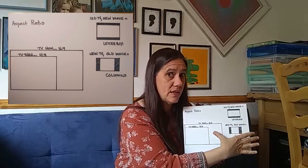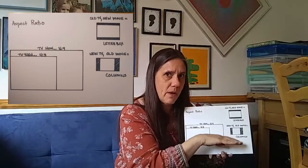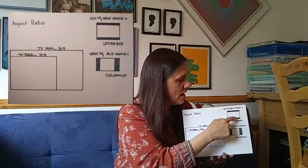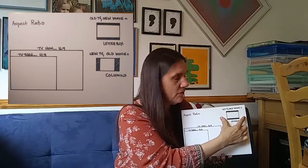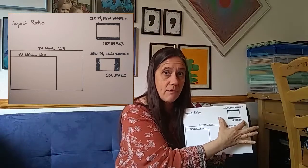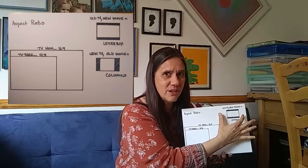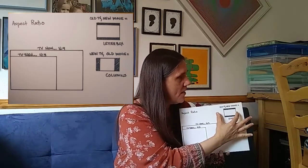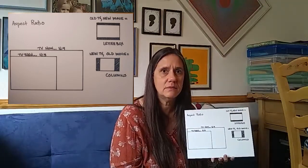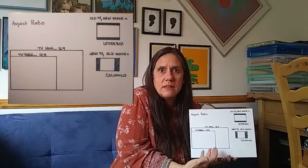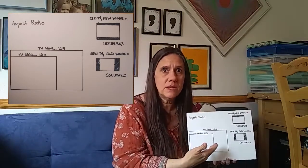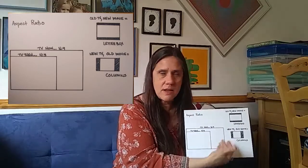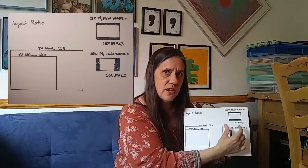If they stretched it out to fit 16:9, you would miss some of the top and bottom. And if you tried to make a wide-format film fit in an old-style TV, they used to do something called pan and scan, which was horrible. They would show part of the film and slowly move it across — really nauseating and awful. You couldn't see the original framing the director intended. So it's much better that we have 16:9 and the smaller older films fit in with columns. So that's aspect ratio — now you'll know exactly what I mean.